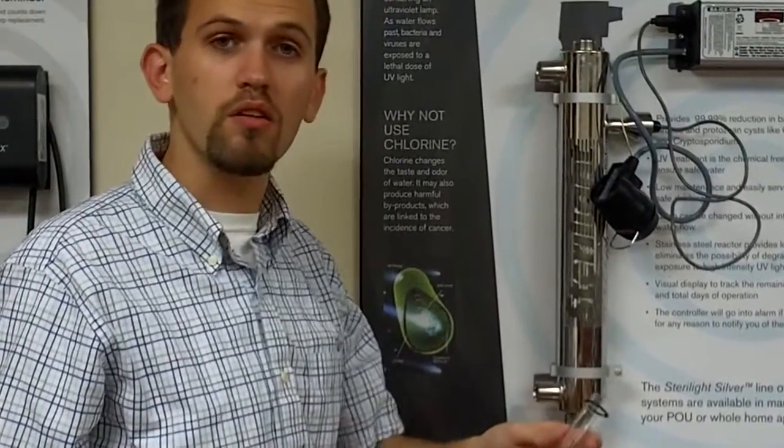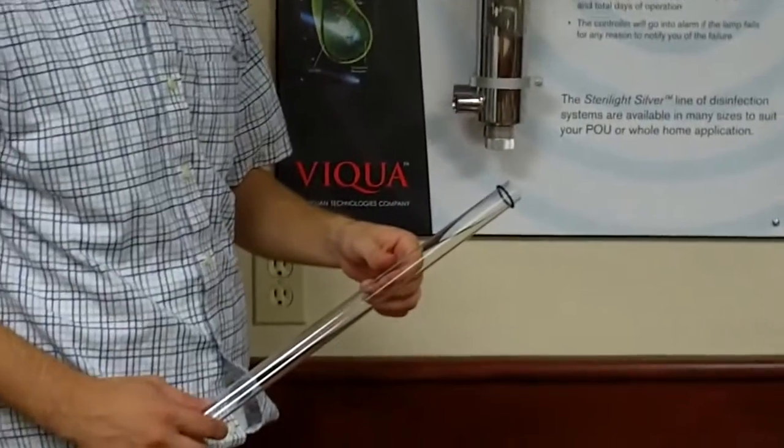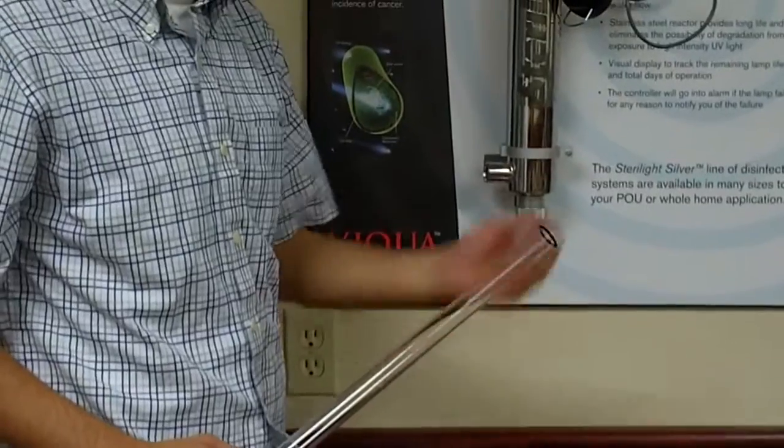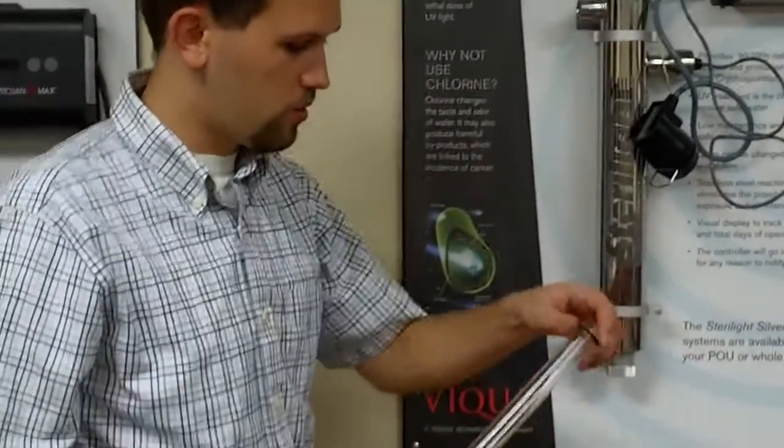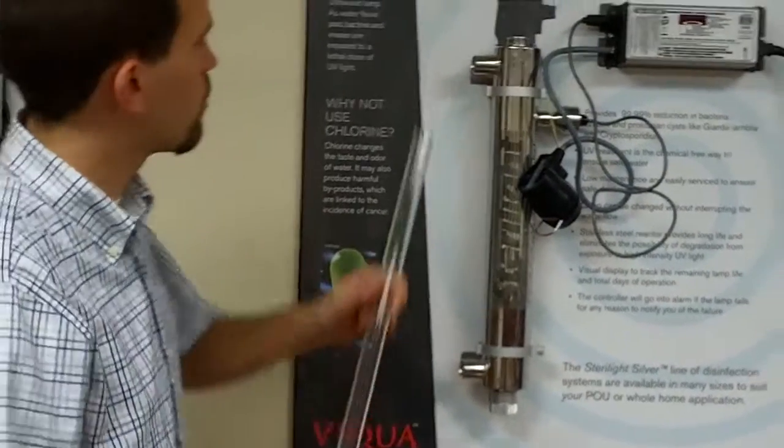And once you're finished, then you can just reinstall it back into your system. So all of our lamps do come with two brand new o-rings that you can use. That way your system is always at its peak performance. So to reinstall it, we do pretty much the exact same thing but in the opposite order.